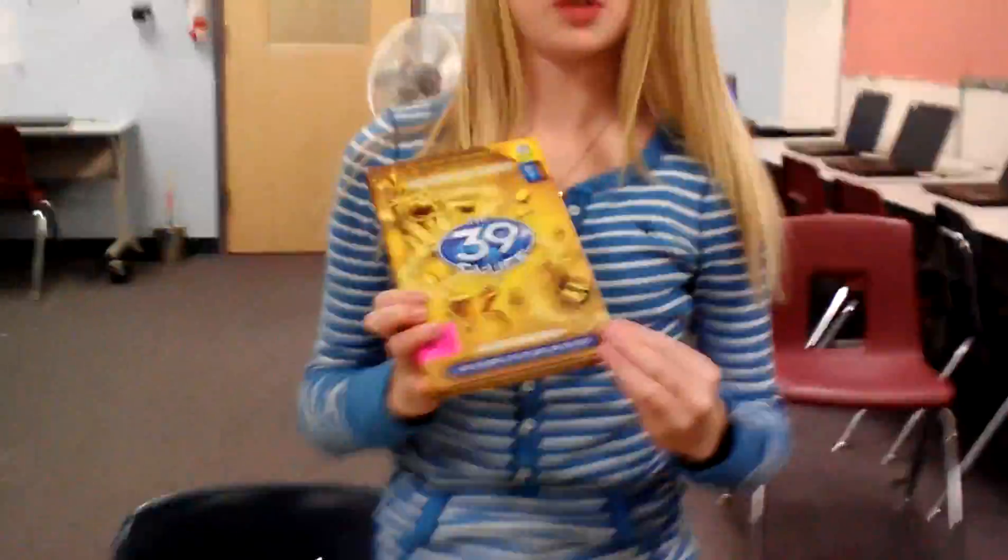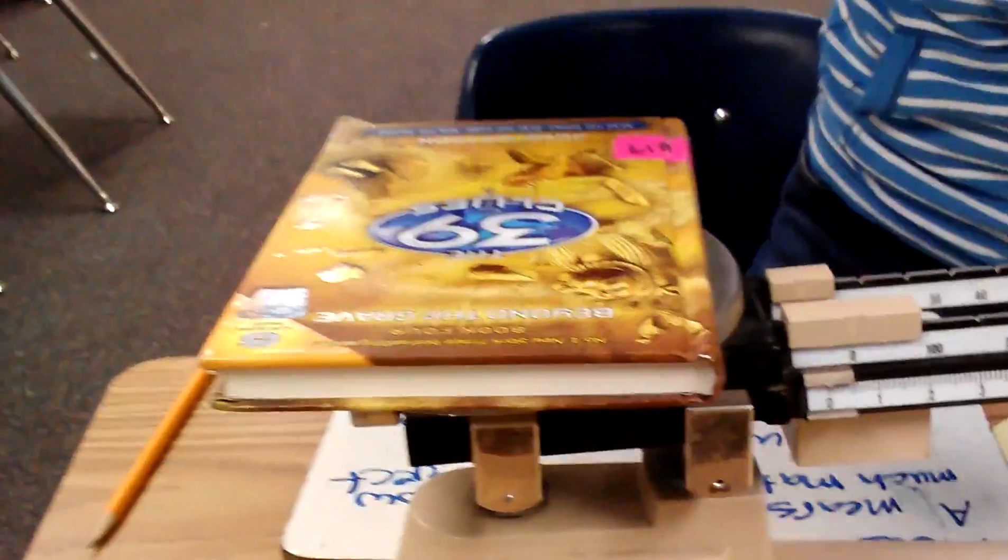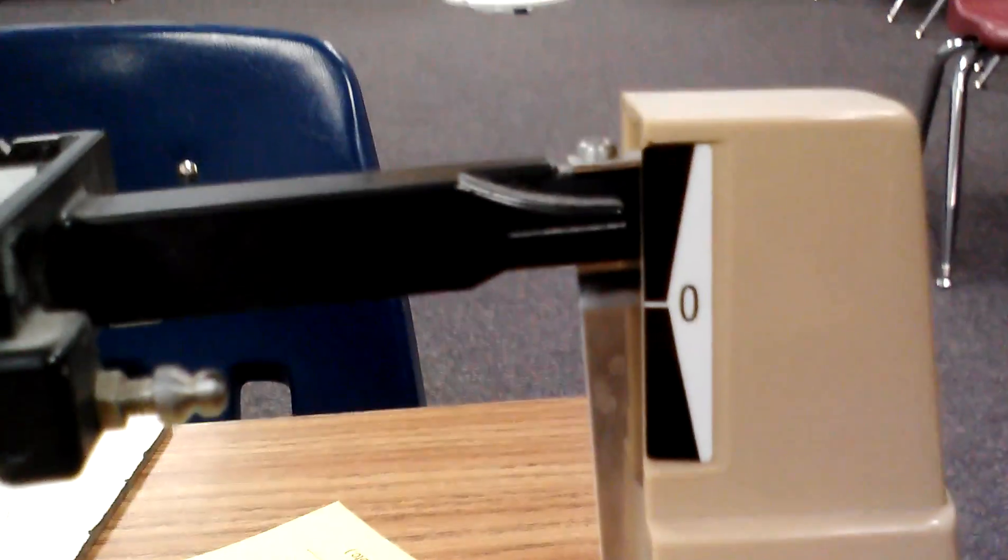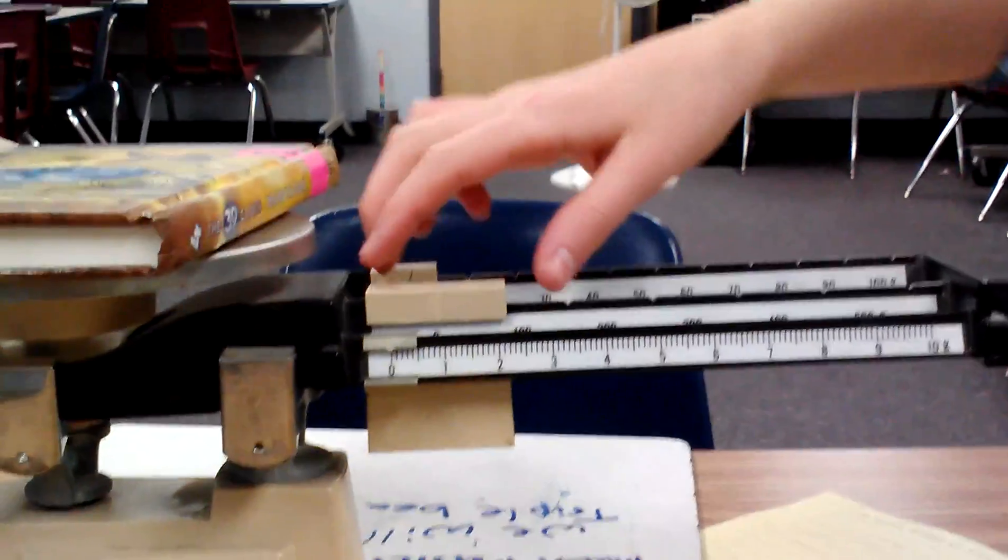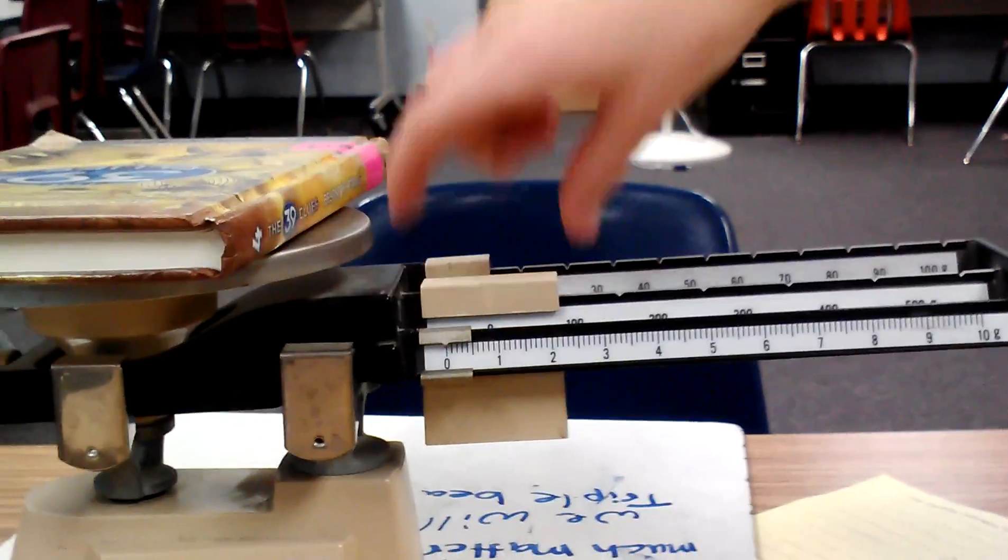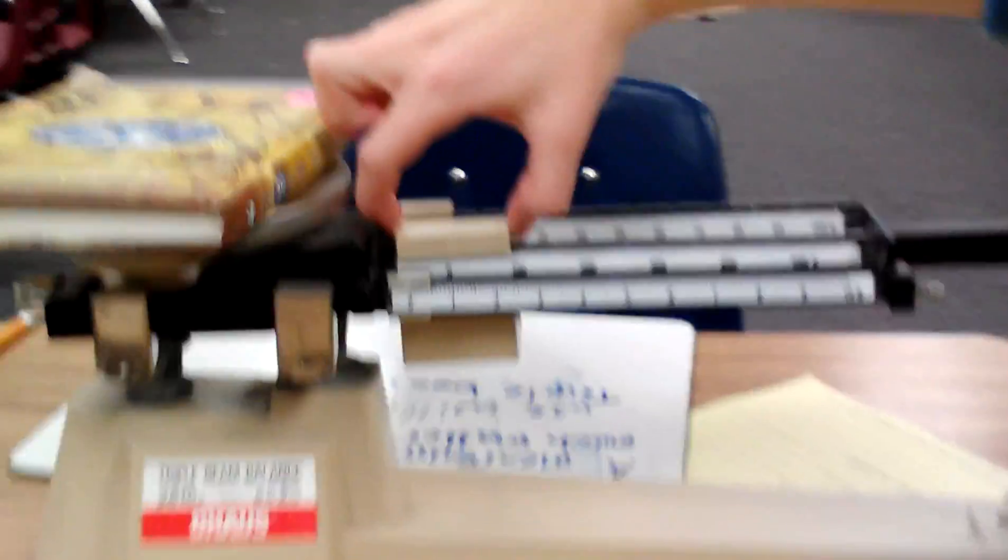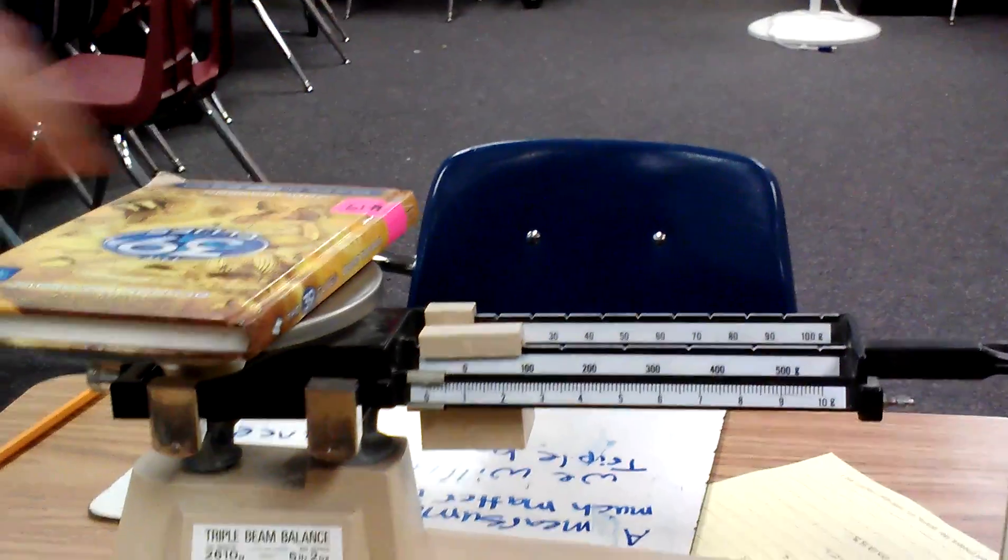Okay, so now you're going to take any object and you're going to measure the mass of it. So you're going to take this book and set it on the scale. And so, see, it just went up. So now what you need to do is you need to start with the hundreds. And you always start with the hundreds and go down. Austin's going to show you how to do it.